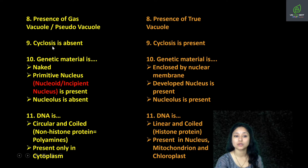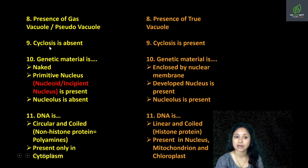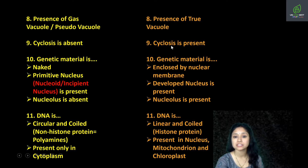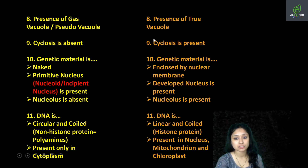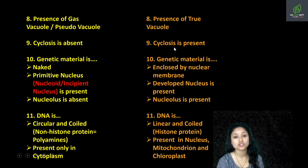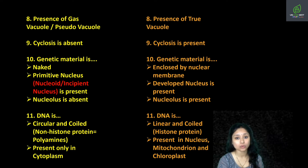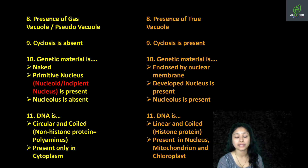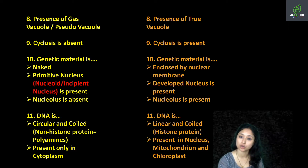Next is cyclosis. The process of cyclosis is absent in prokaryotes while it is present in eukaryotes. Cyclosis is a process in which the cytoplasm shows movement around the vacuole — it can be either anti-clockwise or clockwise.